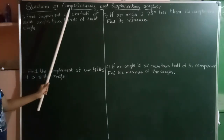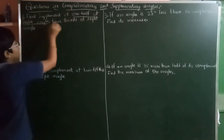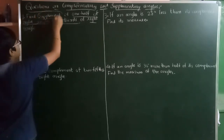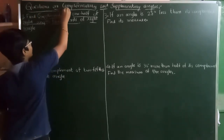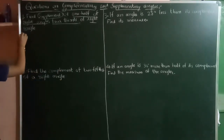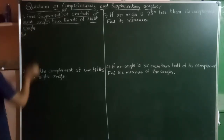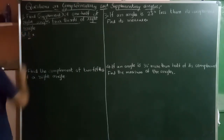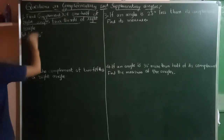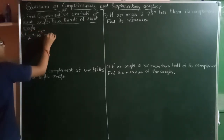First one: find the supplement of one half of a right angle, and four-thirds of a right angle. We should find the supplement. Supplement means the sum will be 180 degrees. Now, one half of a right angle — half of 90 degrees is 45 degrees. One half of 90 degrees is 45 degrees.